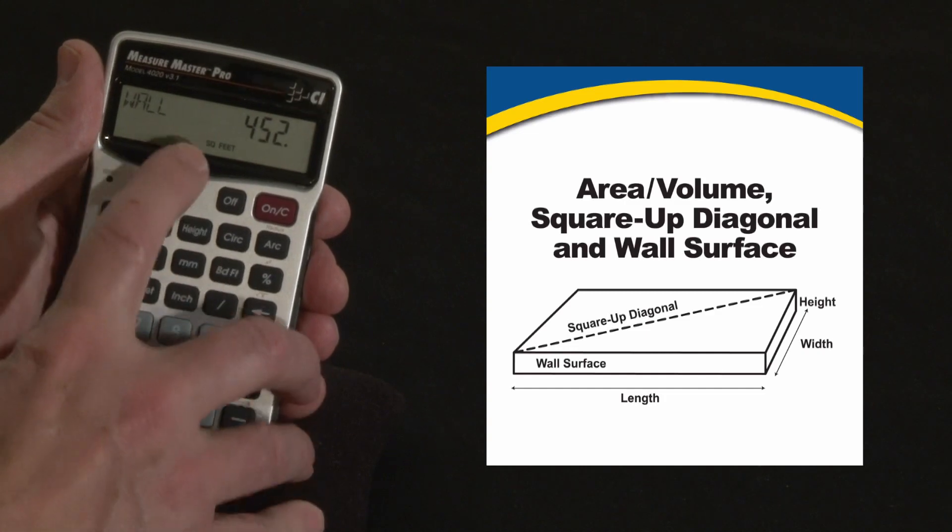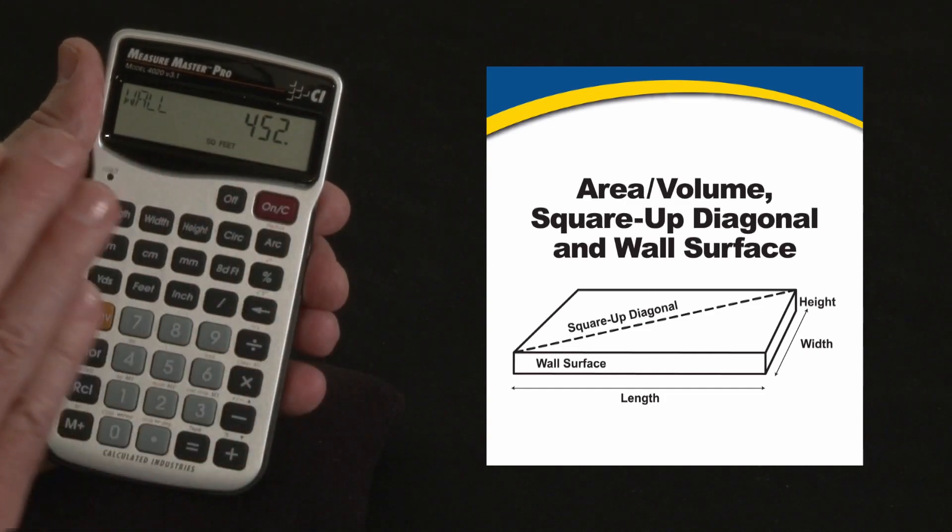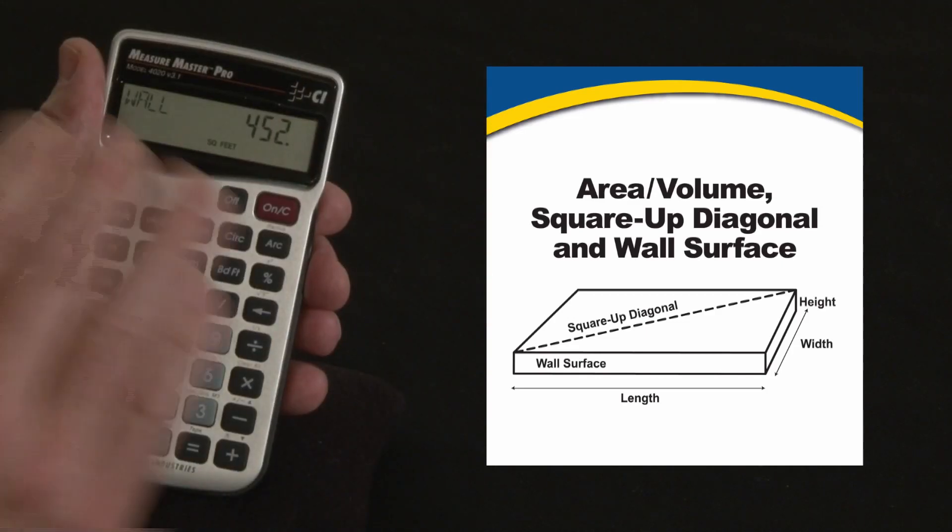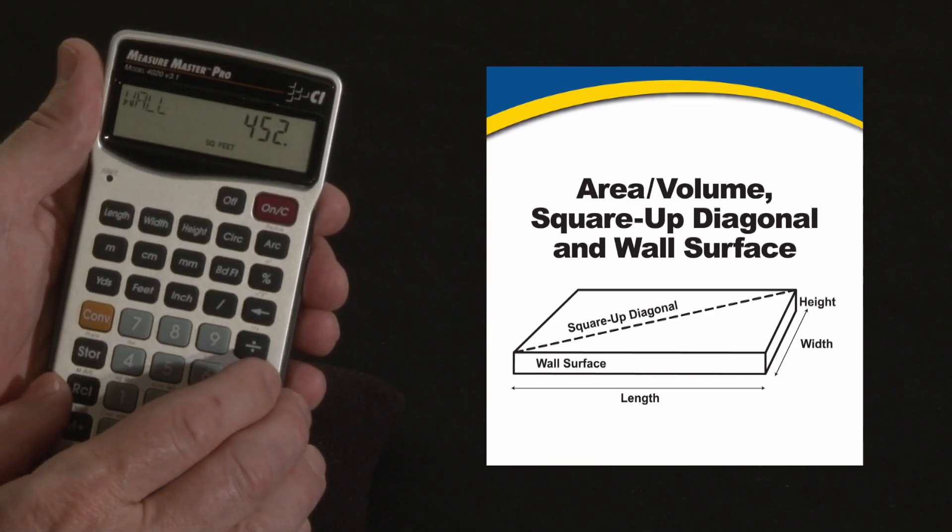Let me press it again, the wall surface area, that's what I was looking for. There's 452 square feet of wall surface area around this room, 8 foot high all the way around that perimeter. So if you're doing sheet rock or painting or paneling or any kind of wall covering, that's the number you're looking for.